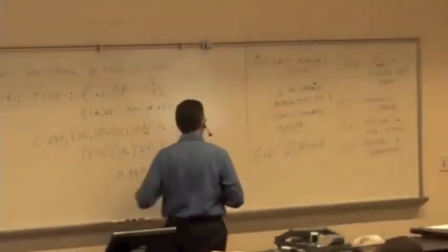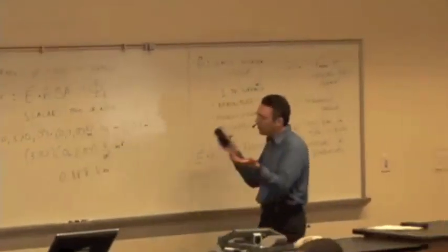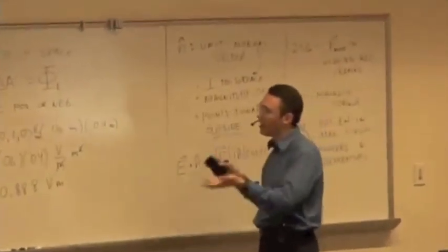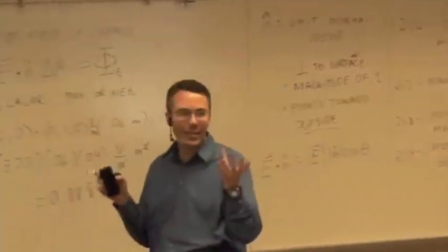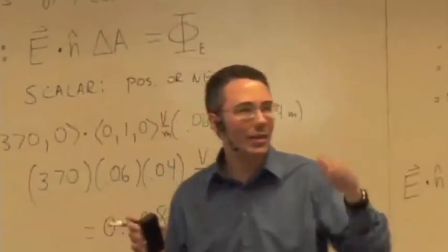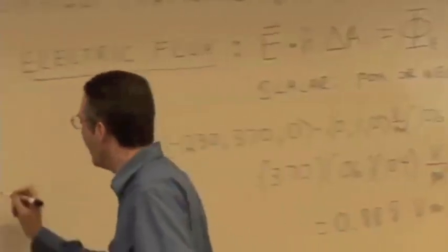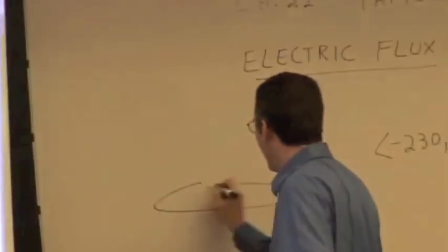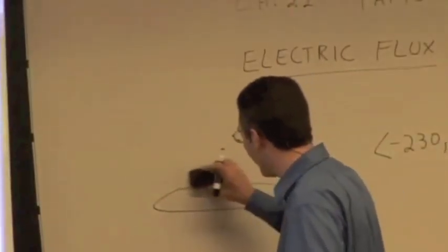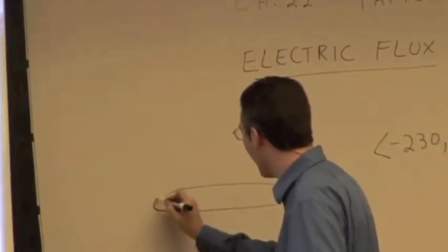Because the angle is between the two vectors, and the two vectors are the electric field and the unit normal vector. It's not the angle between the surface and the electric field. So this was a tricky one. But it was a good one so that you don't make this mistake ever again on a homework or a test. You got it out of your system now.